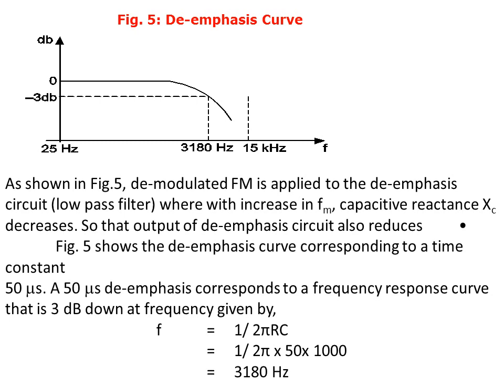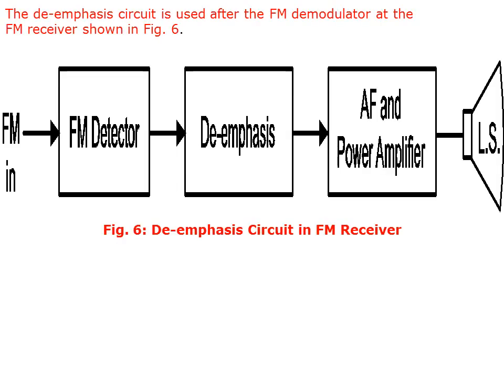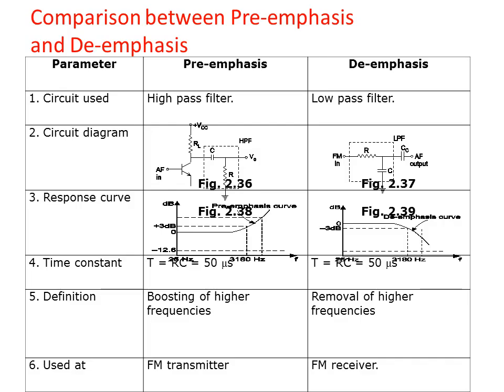A 50 microsecond de-emphasis corresponds to a frequency response curve that is 3 dB down at a specific frequency. The de-emphasis circuit in the FM receiver is shown in the figure. There is a comparison table between pre-emphasis and de-emphasis covering different parameters: kind of circuit used, circuit diagrams, response curve, time constant, definition, and whether used as FM transmitter or FM receiver.